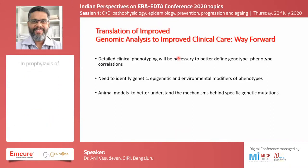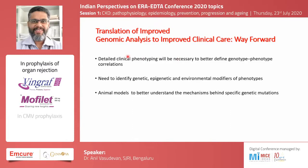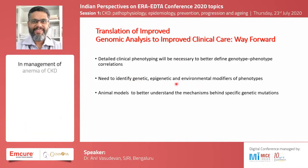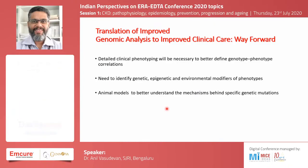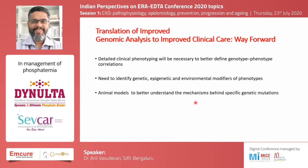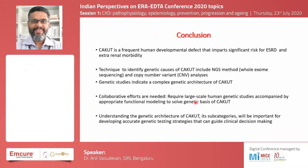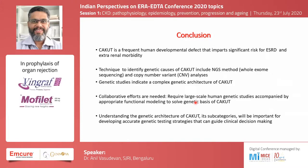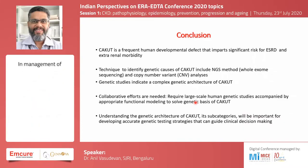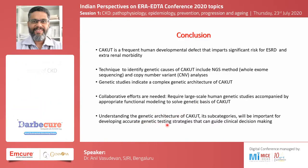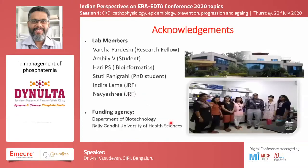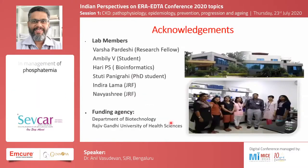To improve genetic testing, we need detailed clinical phenotyping to better define genotype-phenotype correlations, identification of other modifiers such as epigenetic or environmental factors, and better models to understand the mechanisms of identified genes. In conclusion, CAKUT is a frequent human developmental defect. Techniques to identify genetic causes include NGS and copy number variant analysis through microarray, but the complex genetic architecture of CAKUT requires large collaborative efforts to develop accurate genetic testing strategies that can guide clinical decision making. Thank you.